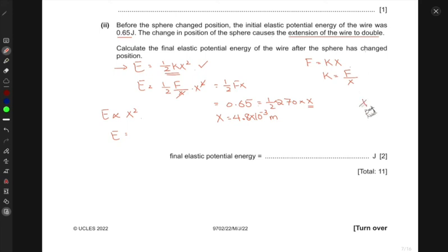You can just say that the X is doubled. So if it was X initially, now it would be 2X. So the ratio of this would just be 2X over X and X cancels and it's just 2. So the final energy would be 0.65, the initial energy multiplied by the square of the extension, the ratio of the extension, which is 2X by 2, which is 2 squared. So this gives me 2.6 joules.